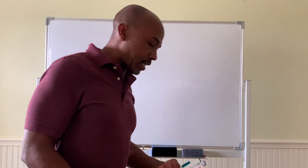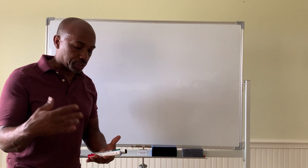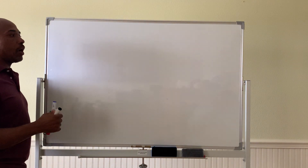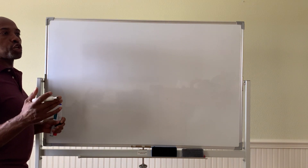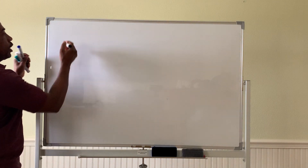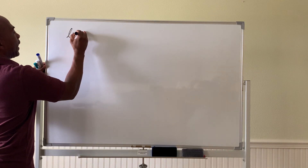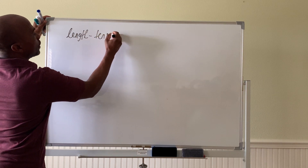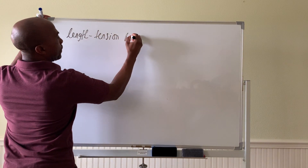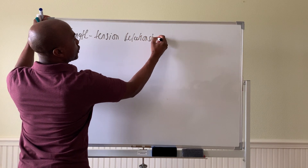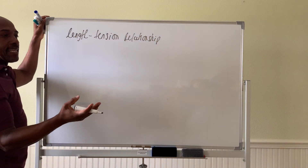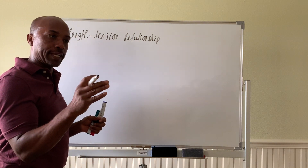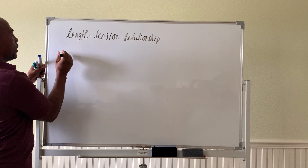Let's continue our discussion of muscle contraction and tension. This time I want to talk about how muscles create the most tension when they're engaged — what we call the length-tension relationship, meaning the muscle length at the beginning of contraction determines how much force you can generate.